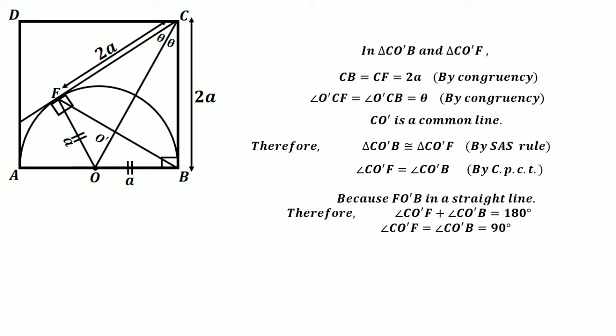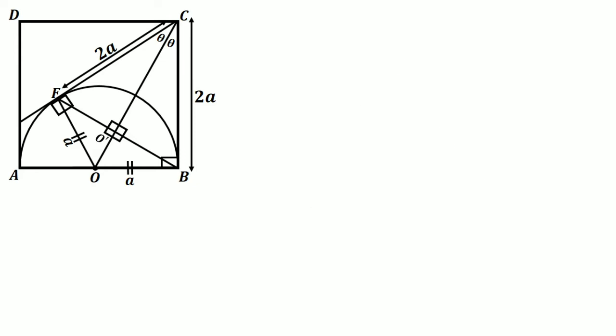Now we mark this in our figure. In right triangle CO'B, sine of theta equals A divided by A times root 5, which gives 1 over root 5.